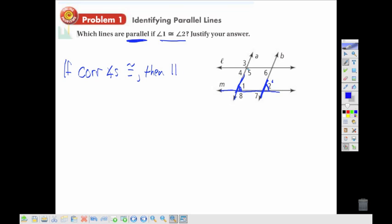Which lines? We're talking about lines A and B, so we can conclude that A is parallel to B. Notice this does not tell us anything about lines in M, because we don't have any of these angles up here.